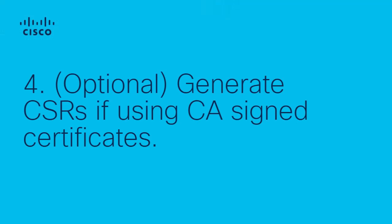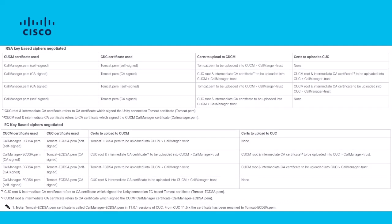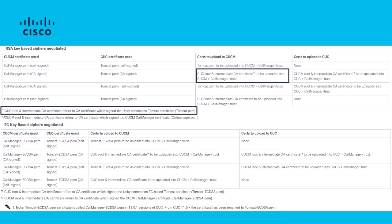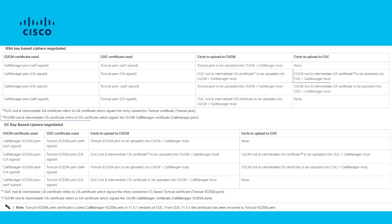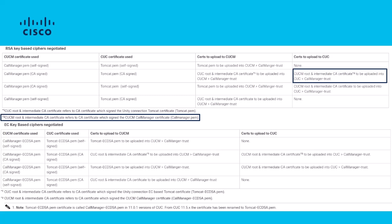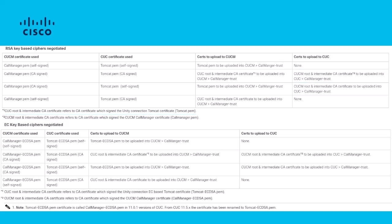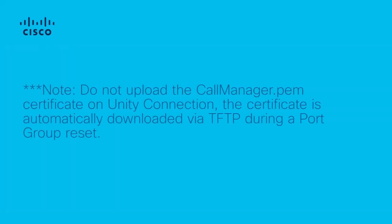Step 4 is optional. If you're using CA signed certificates, generate CSRs for both the RSA and ECDSA Tomcat certificates and get them signed by your CA. The CA chain used to sign Unity's Tomcat certificates will need to be uploaded to Call Manager as a CallManager-Trust. The CA chain used to sign Call Manager's CallManager.pem certificate will need to be uploaded to Unity as a CallManager-Trust. It's common that the same CA signing chain is used to sign both sides for simplicity. Note there's no need to upload Call Manager's CallManager.pem certificate on Unity Connection, since the CallManager.pem certificate is automatically downloaded via TFTP by Unity during a port group reset.